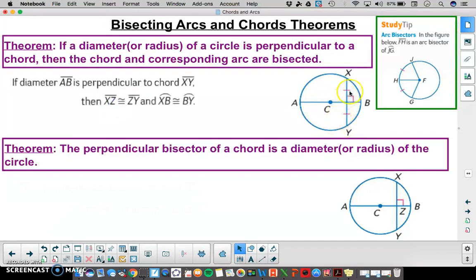Therefore, arc XZ, which Z is this point of the intersection and XY are congruent and arc XB and arc BY are congruent.